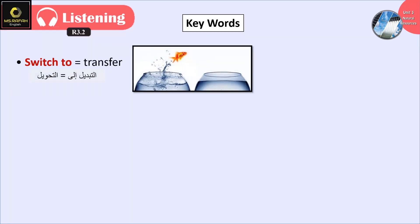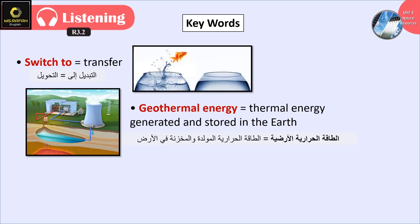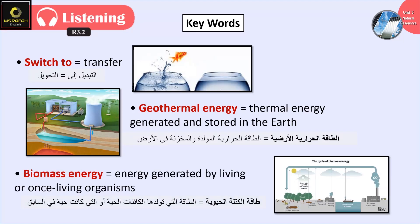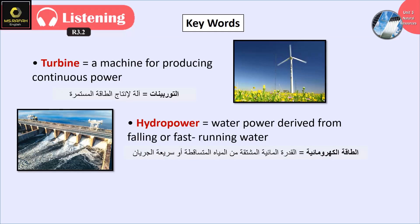Keywords: Switch — to transfer. Geothermal energy — thermal energy generated and stored in the earth. Biomass energy — energy generated by living or once living organisms. Turbine — a machine for producing continuous power. Hydropower — water power derived from falling or fast running water.